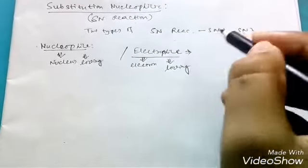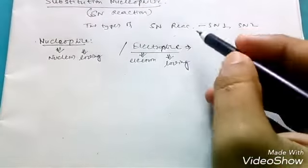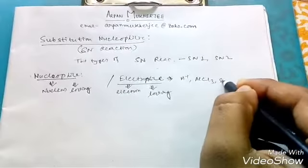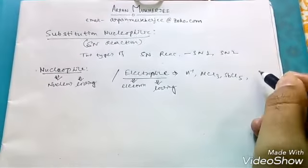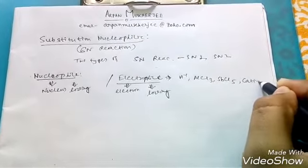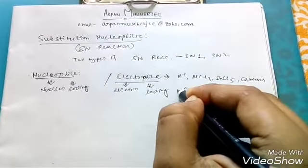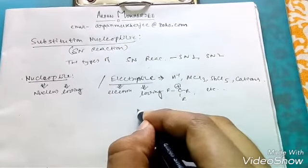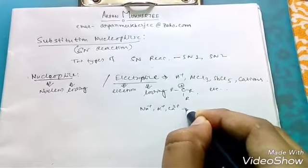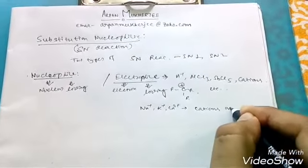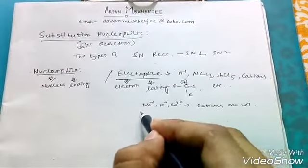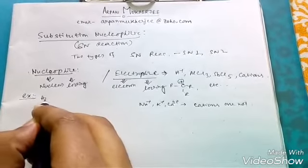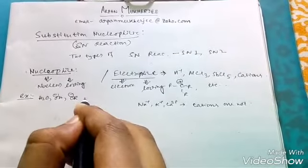We can discuss about it later on, but today our focus is substitution nucleophilic reaction. Still, I am giving you some examples. Electrophiles are like H+, AlCl3, SbCl5 and others. Cations, carbocations like CR3+. These are electrophiles. But remember Na+, K+, Ca2+ - these cations are not electrophiles because these species can't accept at least a pair of electrons. And the examples of nucleophiles are H2O, OH-, alkoxide and others. There are many others.